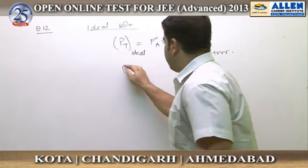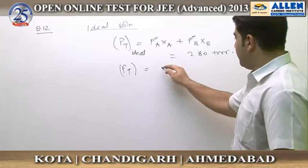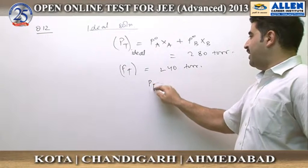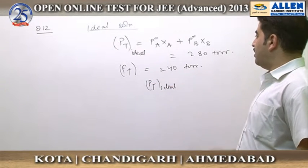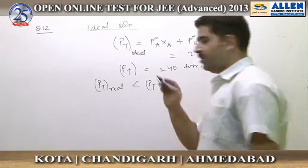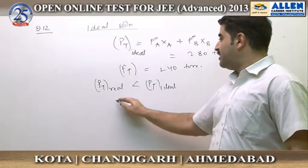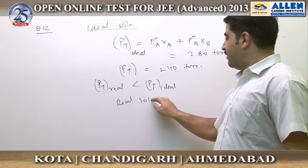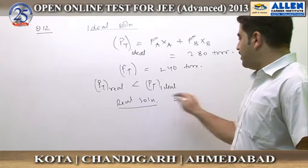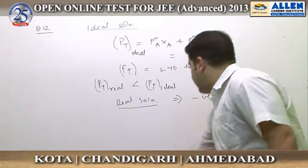The total pressure of this solution is actually given to us as 240 torr. So we can see that Pt ideal is greater than Pt real for this solution. This means it is not an ideal solution — it is a real solution. Since the vapour pressure is less than what has been predicted by Raoult's law, it shows negative deviation from Raoult's law.